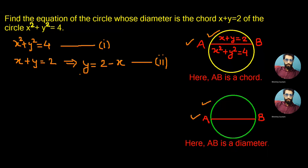Now if we put the value of y from equation number 2 into the same circle equation — that is equation number 1 — we get x² + (2 − x)² = 4 on the right side.